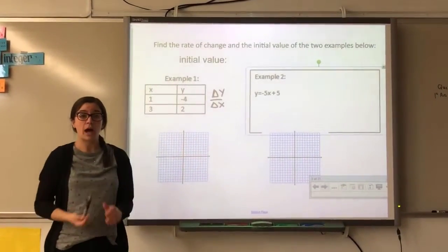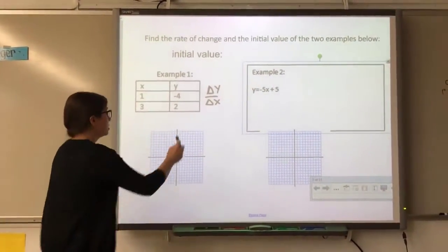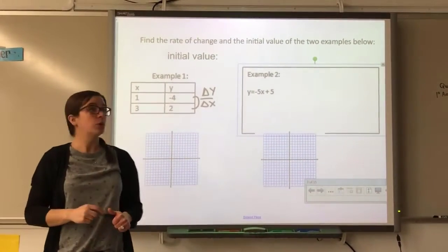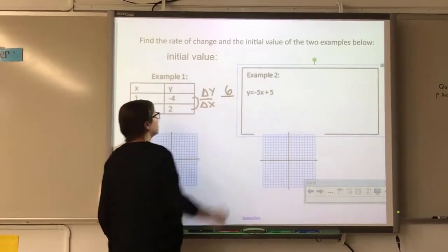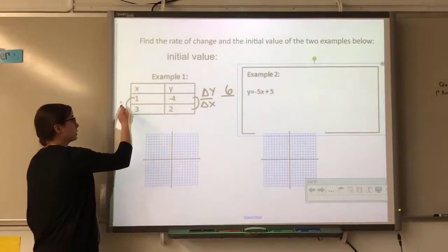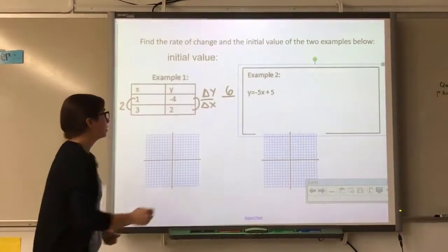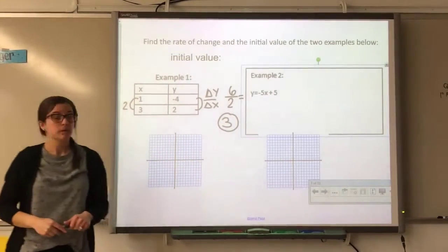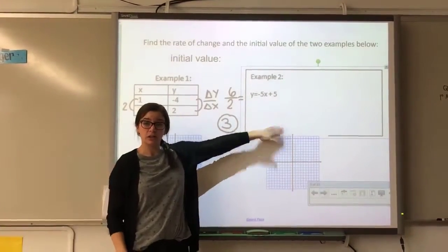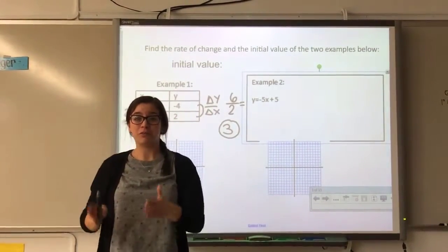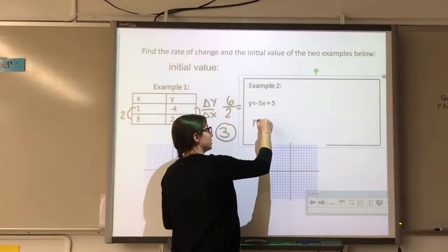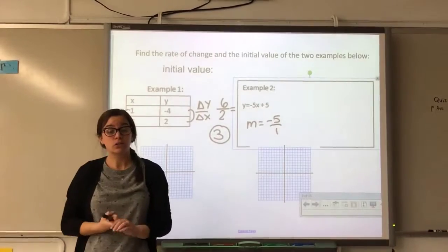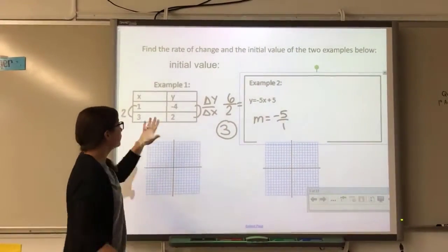Rate of change is change in Y over change in X — vertical change compared to horizontal change. From negative 4 to positive 2 on Y, I'm going up 6. From 1 to 3 on X, I'm going up 2. So 6 divided by 2 — my slope is 3. For the equation example, my rate of change is always the number in front of the variable x, so my rate of change is negative 5.